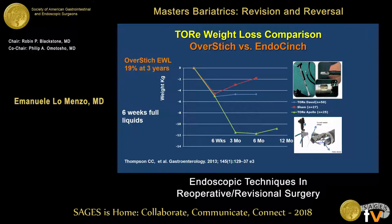They also compared the Overstitch to another device in which the approximation is limited to the mucosa, and they included a sham arm in this study. The results were significantly better for the Overstitch, in which there's a full-thickness approximation of tissues, opposed to the other two arms.